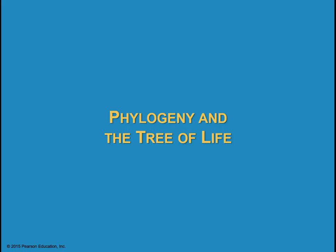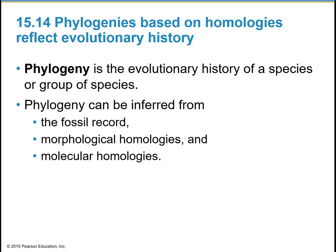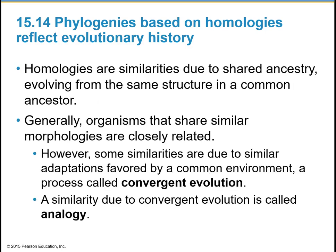Phylogeny and the tree of life: phylogeny is the evolutionary history of a species or group of species. Phylogeny can be inferred from the fossil record, morphological homologies (similar physical traits), and molecular homologies. Homologies are similarities due to shared ancestry — evolving from the same structure in a common ancestor. Generally, organisms that share similar morphologies are closely related. However, some similarities are due to similar adaptations to a common environment; this is called convergent evolution, and such a similarity is called an analogy.